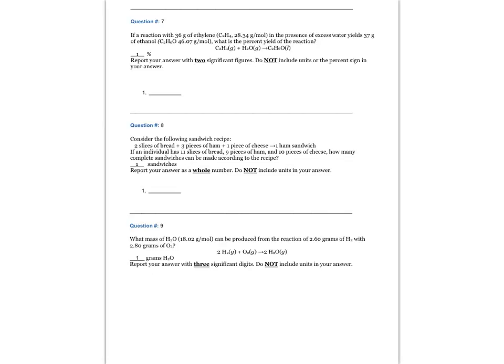Question number seven. If a reaction with 36 grams of ethylene in the presence of excess water yields 37 grams of ethanol, what is the percent yield of the reaction? Report your answer with two significant figures. Do not include units or the percent sign in your answer. The answer is 63 — 63 percent.